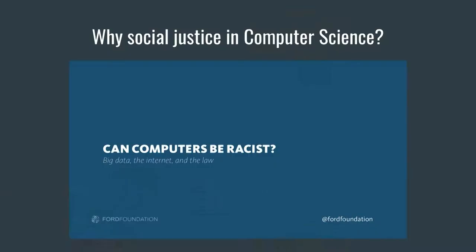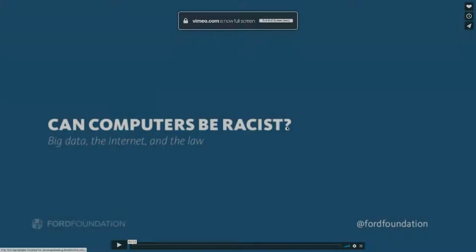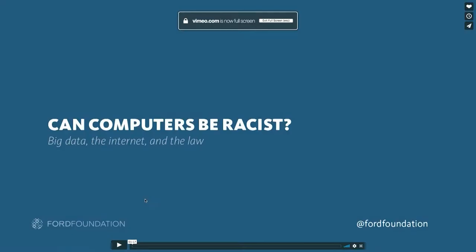I want to give one example that will motivate several points about why social justice is important in computer science. This is from a computer scientist named Latanya Sweeney, and she does work on data gathering, privacy, and the way that big data systems and algorithmic systems impact people.